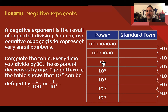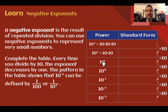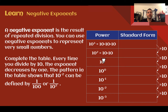Let's learn: negative exponents. A negative exponent is the result of repeated division. We can use negative exponents to represent very small numbers — like 1 tenth, 1 one-hundredth, 1 one-thousandth. Those are going to be represented by negative exponents. Let's go through a table to follow the pattern and see how negative exponents work using repeated division.